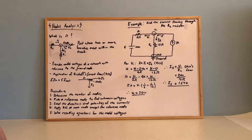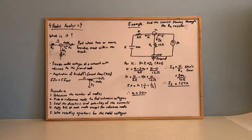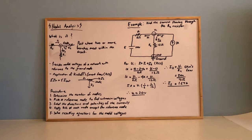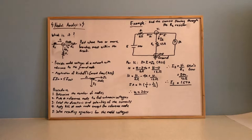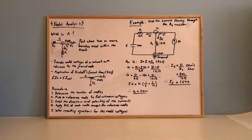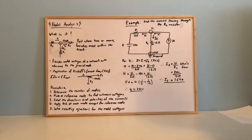The following procedure enables you to solve any nodal analysis problem. Step one is to determine the number of nodes within a given circuit. Two is to pick a reference node which can be identified as the ground to establish unknown nodal voltages. Three, label the directions and polarities of the currents. Step four, apply Kirchhoff's current law at each node except the reference node. Five, solve resulting equations for the nodal voltages.